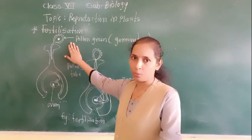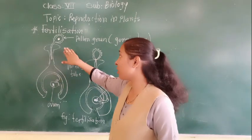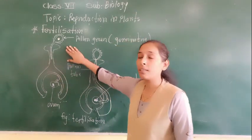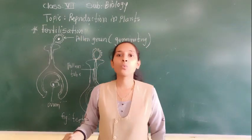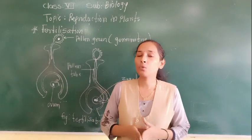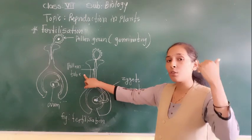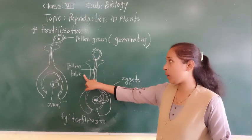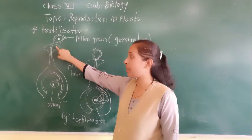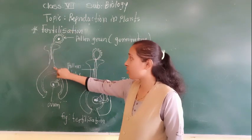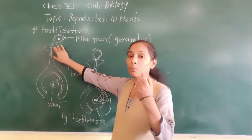As we know, we have seen the pollination process. Because of pollination, the pollen grains from the anther reach the stigma. When the pollen grains land on the stigma, they start to produce one tube, which we call the pollen tube, and that pollen tube penetrates the stigma and also the style.